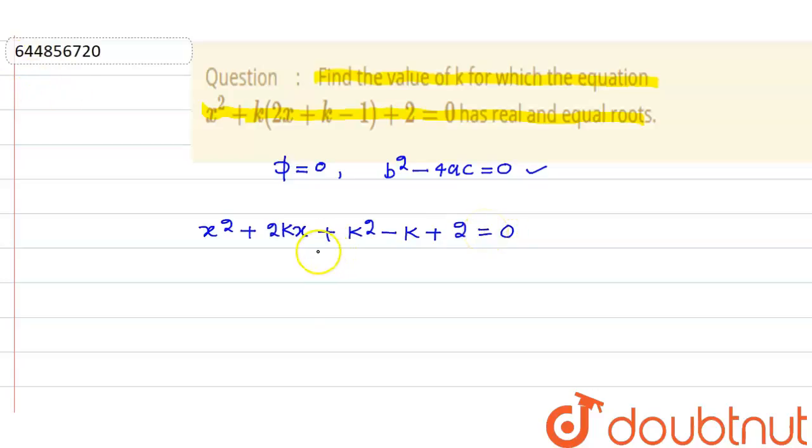We need to find the value of k for which the quadratic equation has real and equal roots. So just apply the condition: b² - 4ac = 0.